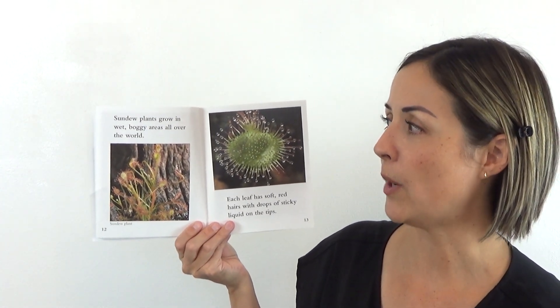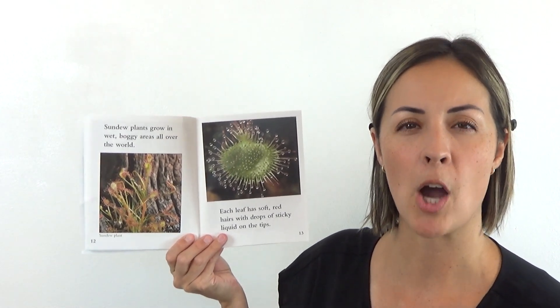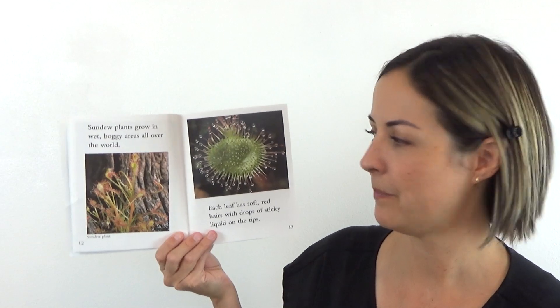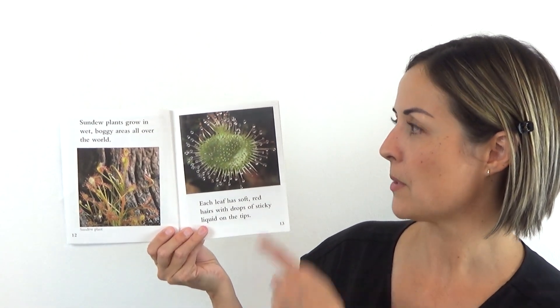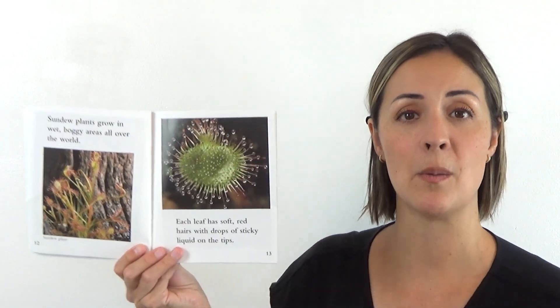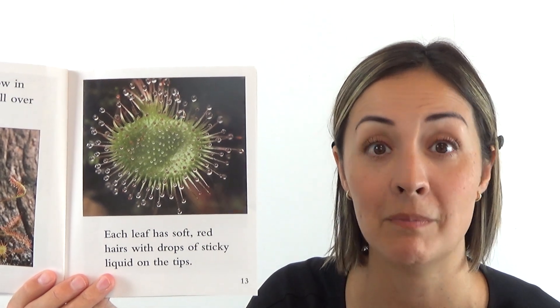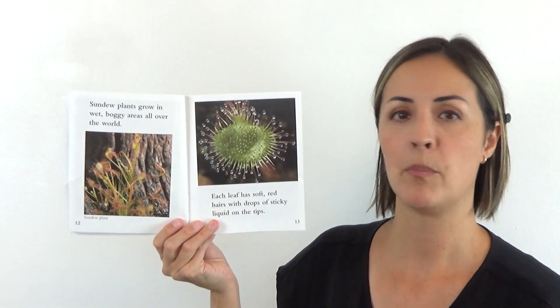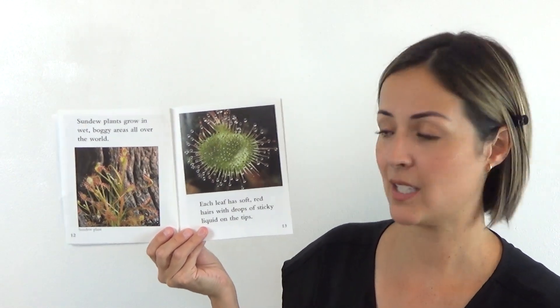Sundew plants grow in wet, boggy areas all over the world. A boggy area means it's wet and muddy. Each leaf has soft red hairs with drops of sticky liquid on the tips. So some kids look at those and they say, hey, it looks like it's covered with drops of water. It might look like it, but those are not drops of water. It's a liquid that's very sticky instead.